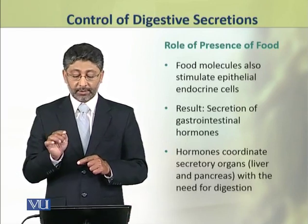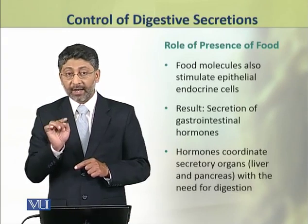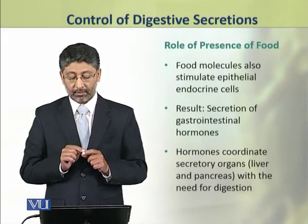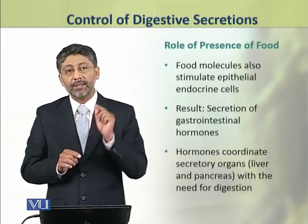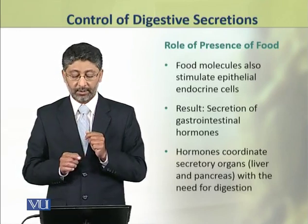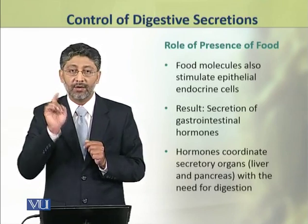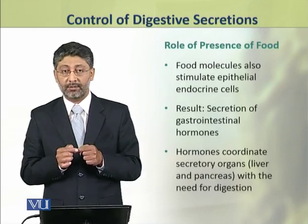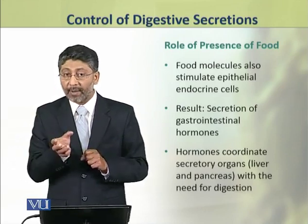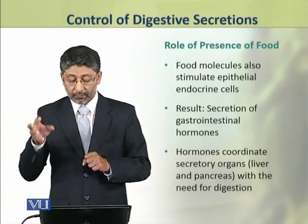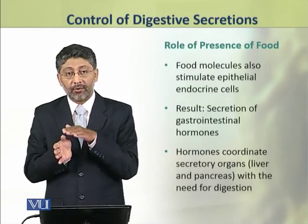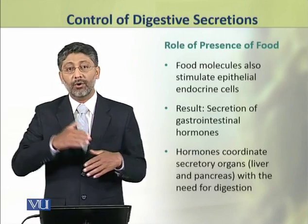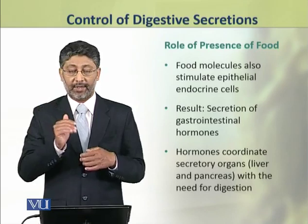In addition to directly acting, food molecules also activate epithelial endocrine cells. As a result, gastrointestinal hormones are secreted. These gastrointestinal hormones coordinate the secretory organs — such as the liver and pancreas — with the need for digestion. If food is present and digestion is needed, the liver and pancreas will increase their secretions accordingly.